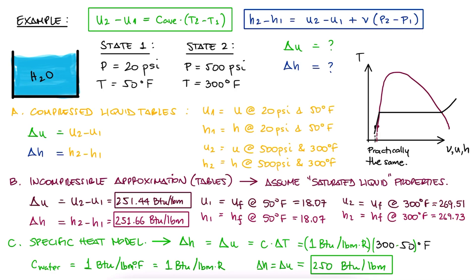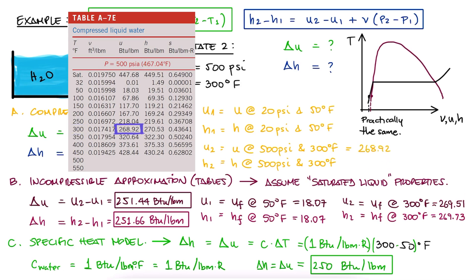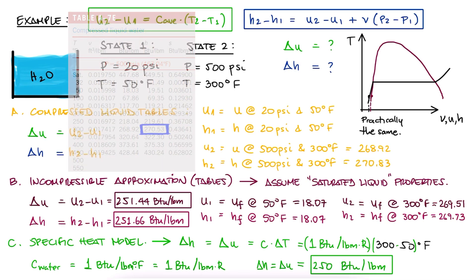And finally, for method 1, we'll use the compressed liquid tables. Now, for 300 Fahrenheit and 500 psi, we can just look up that table. We'd have u2 equals to 268.92, and h2 equals to 270.53.